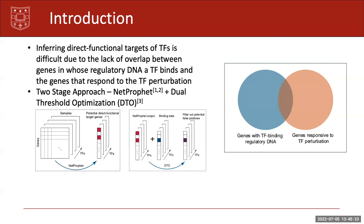NetProphet exploits the observation that the response to perturbing a TF is strongest on its direct target and dissipates rapidly as it propagates through the network.